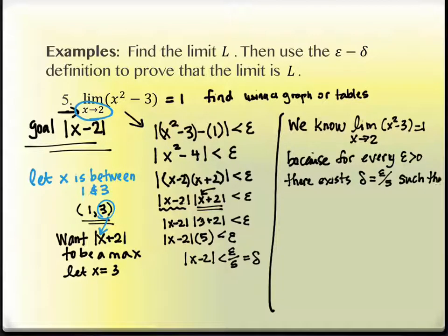Such that when, and then we've got to go from the bottom up on our algebra part, when x minus two is less than delta, or you could say less than epsilon over five. That would be fine. Then, when that happens, then we can guarantee that the absolute value of x squared minus three minus my limit of one is less than epsilon. And we are finished with our proof.